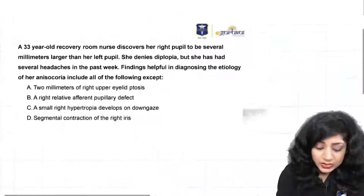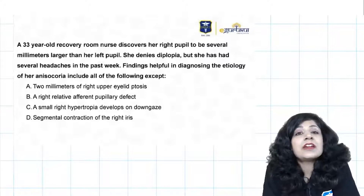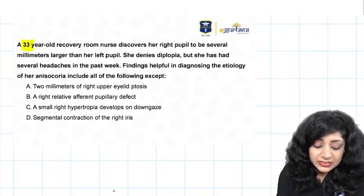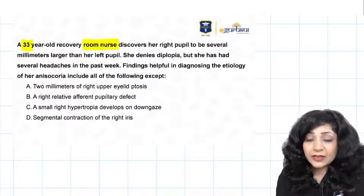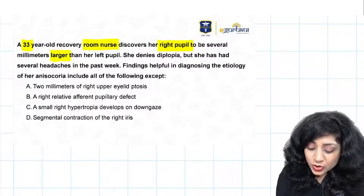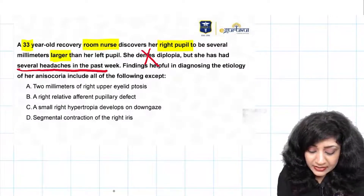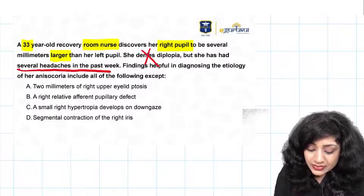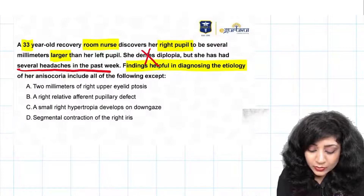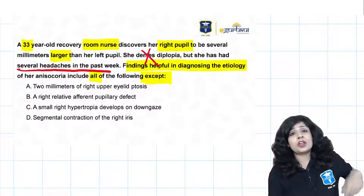There is an extension of this question where they are asking you the same thing but in a different manner. The same question could be stated as: a 33-year-old nurse presents with the right pupil larger than the left pupil. She is not having any diplopia but is having a headache. The question asks: findings helpful in diagnosing the etiology include all except — so which finding is not consistent with the etiology?